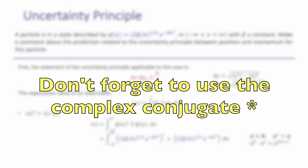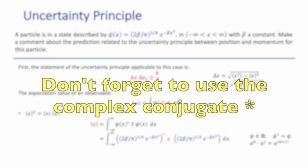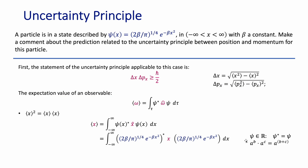The position operator is just multiplication by the position, in this case by x. Note that this is the most general expression using the complex conjugate, but in this particular case the function is a real-valued function, so the complex conjugate equals the wave function itself. Also remember that since we have exponentials, multiplying two exponentials just adds the exponents. After performing all multiplications, we end up with x times the wave function squared.